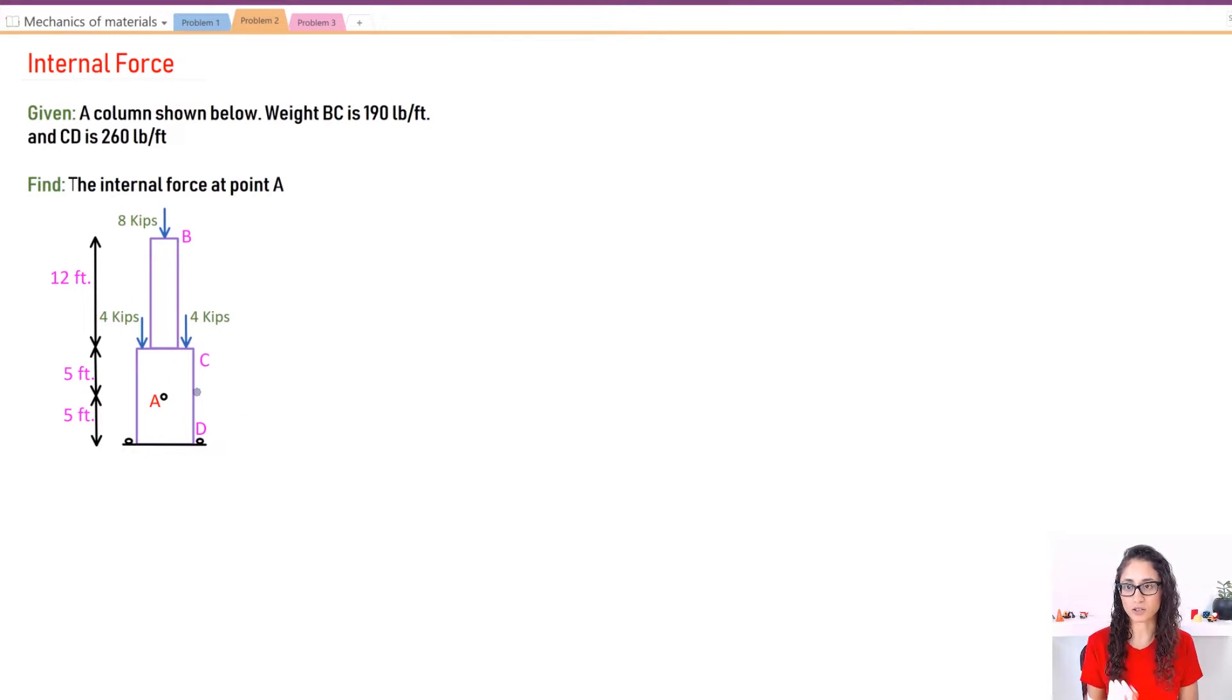Okay guys, so we're given this column and the distributed weight for BC is 190 pounds per foot and for CD is 260 pounds per foot. Note that here this is fixed and we need to calculate the internal force at point A, at this point right here. So we need to find the internal force. That means we need to cut at A and determine the force that's going to A for this to be all in equilibrium.